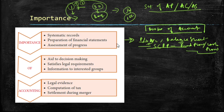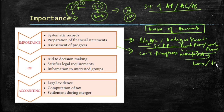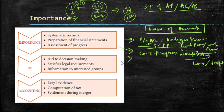Through accounting, the progress of the company is monitored — where the company is heading, whether it will be in loss or profit in the future. This is only possible when they have proper records of transactions. All this information aids in decision making by the management.